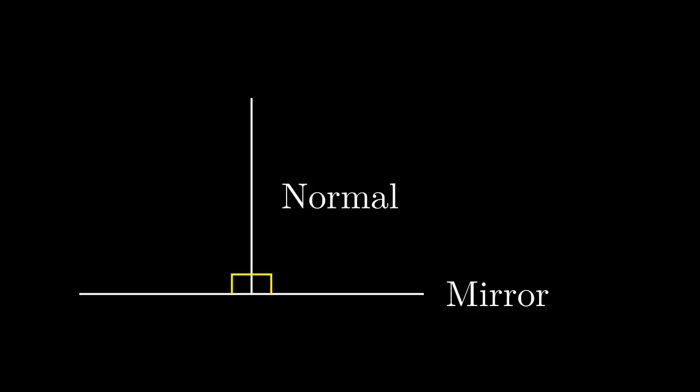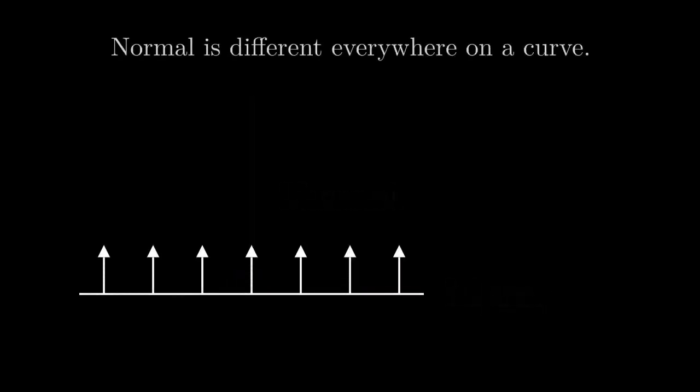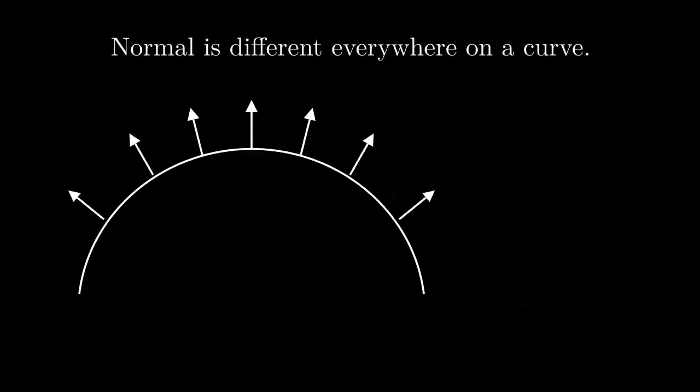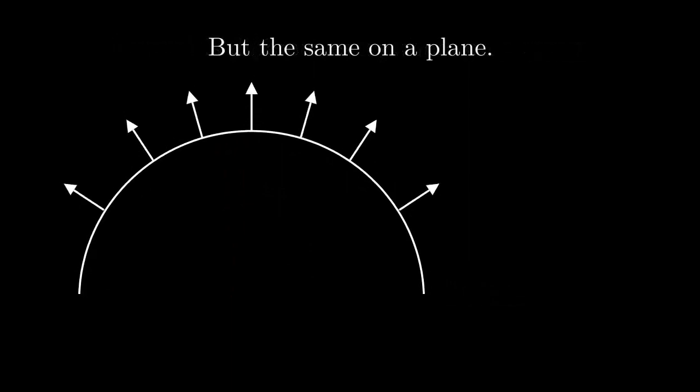You might say the direction of a mirror is simple — why does it have a name? Yes, it is simple if the mirror is flat. But if a mirror is curved, the idea of the normal becomes useful, because it is different everywhere on the curve.